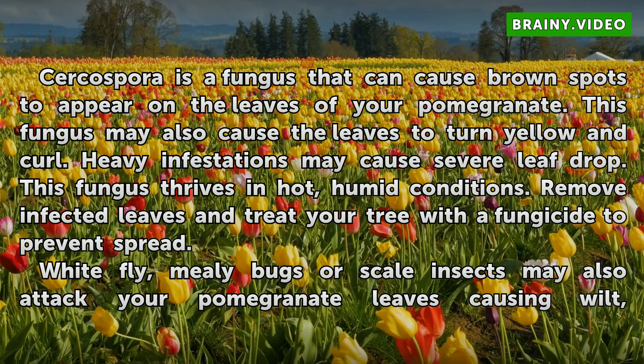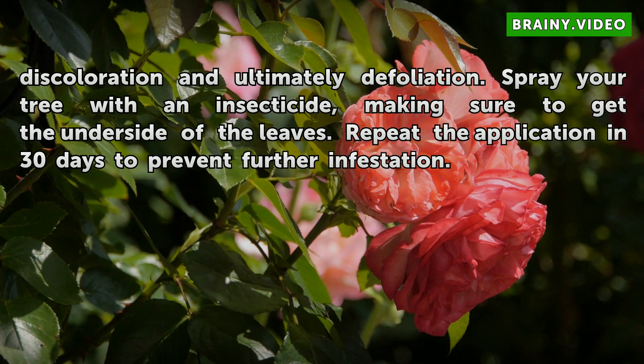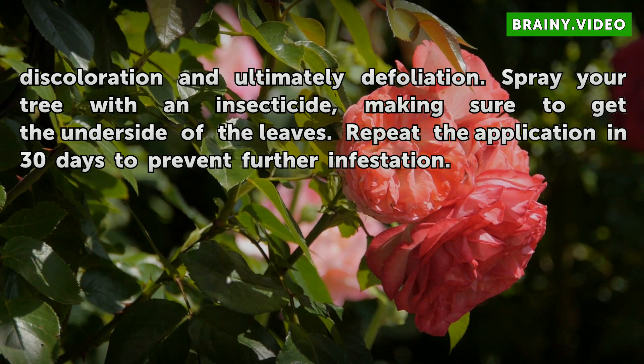Whitefly, mealybugs, or scale insects may also attack your pomegranate leaves, causing wilt, discoloration, and ultimately defoliation. Spray your tree with an insecticide, making sure to get the underside of the leaves. Repeat the application in 30 days to prevent further infestation.